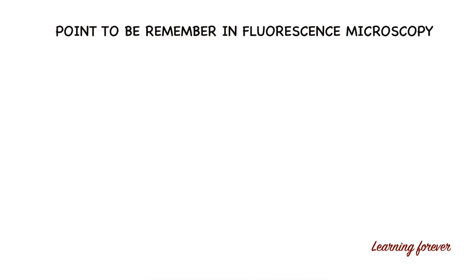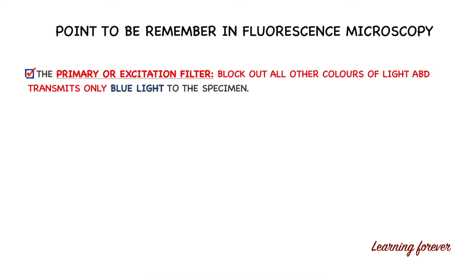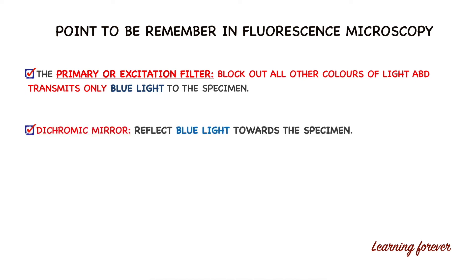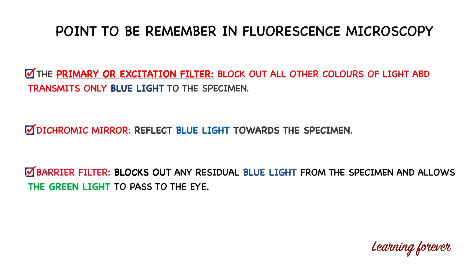Key points to remember in fluorescence microscopy: First, the primary or excitation filter blocks out all other colors of light and transmits only blue light to the specimen. Second, the dichromic mirror reflects blue light towards the specimen. Third, the barrier filter, also called the emission filter, blocks any residual blue light coming from the specimen and allows only green light to pass to the eye. The barrier or emission filter is generally selected based on the dye you are using.